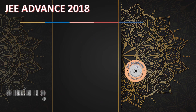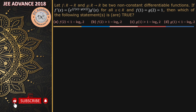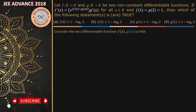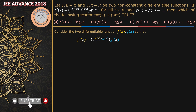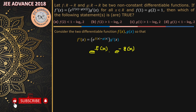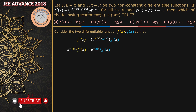We start with the given relation: f'(x) = e^(f(x) - g(x)). This is a differential equation, so we can use separation of variables. Notice that e^(f(x) - g(x)) can be rewritten as e^(f(x)) · e^(-g(x)). Multiplying both sides by e^(-f(x)), we get e^(-f(x)) · f'(x) = e^(-g(x)) · g'(x).